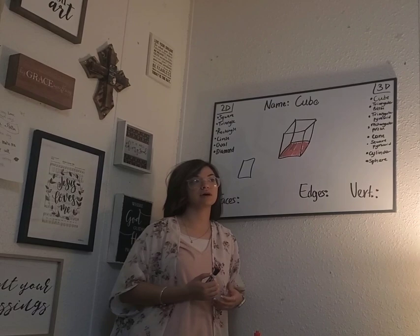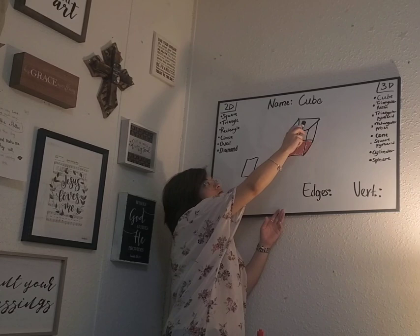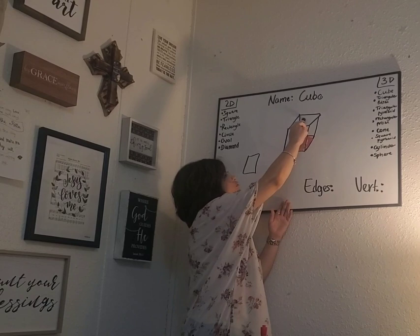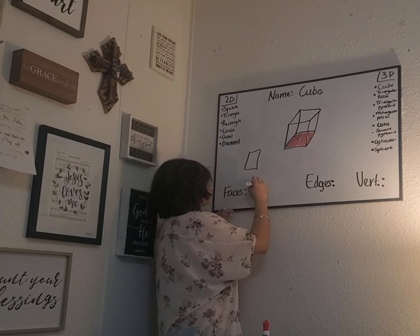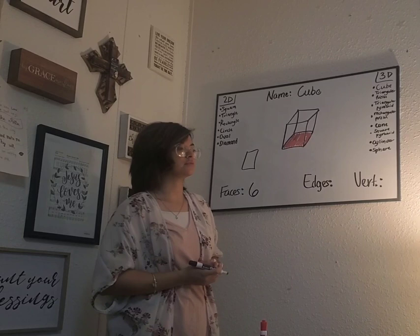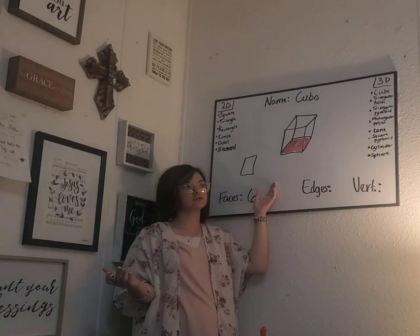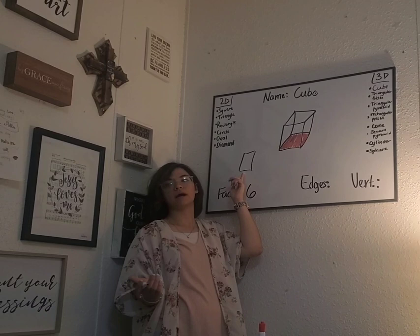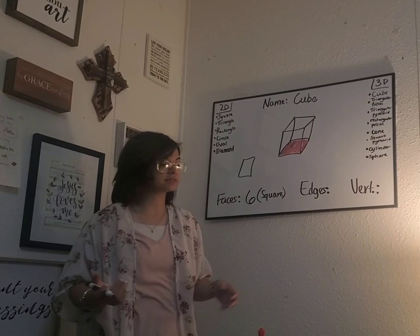We're going to count how many square faces are on our cube. There's one at the top, one at the bottom, one at the back, one at the front, and one on each side — so there are six faces on our cube. We'll fill that in on our worksheet. We're also going to name our face. Remember, our 2D shape is used to make our 3D shape, so what 2D shape makes our cube? A square — so we write that our face is a square. Now some 3D shapes have multiple different faces.